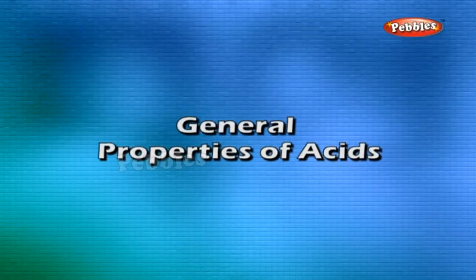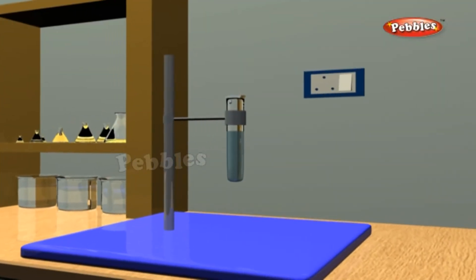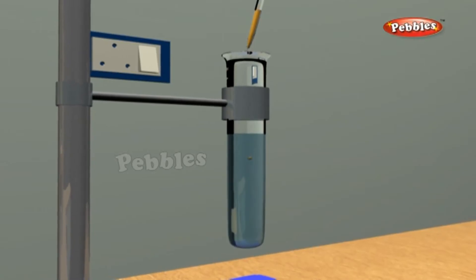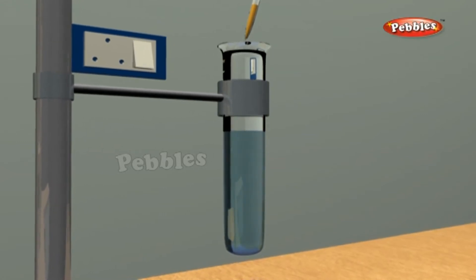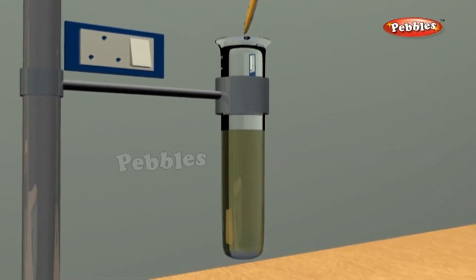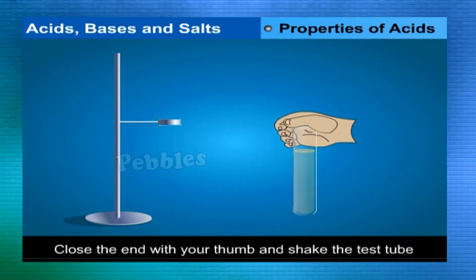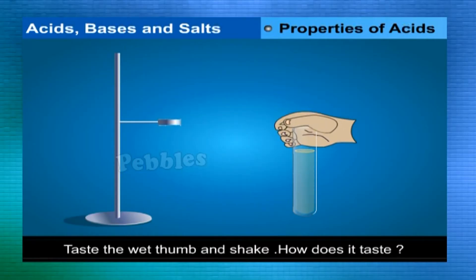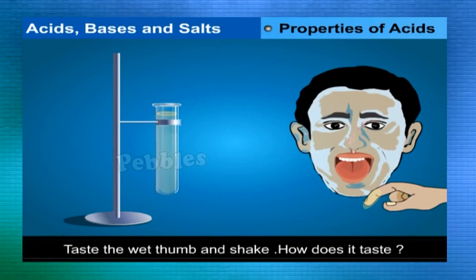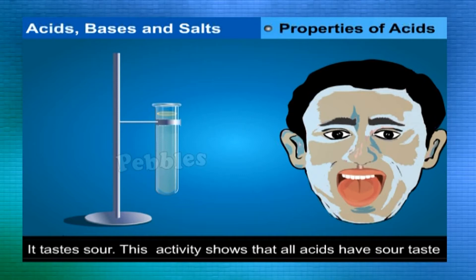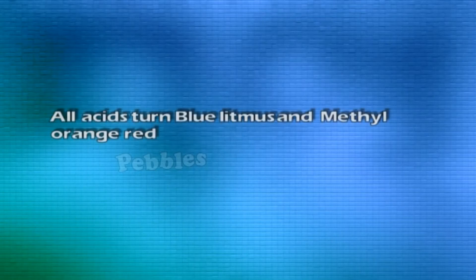General Properties of Acids. All acids have a sour taste. Take a clean test tube full of water, put one drop of HCl into it with a glass rod or dropper, close the end with your thumb and shake. Taste the wet thumb — it tastes sour. This activity shows that all acids have a sour taste.